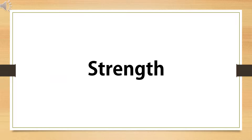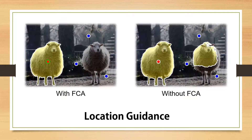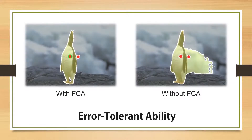FCA net has three key strengths. First, focus invariance: clicks other than the first will focus more on refinement. Second, location guidance: the segmented object will be in the right position. Third, error-tolerant ability: fewer segmentation errors are caused by wrong interactions.